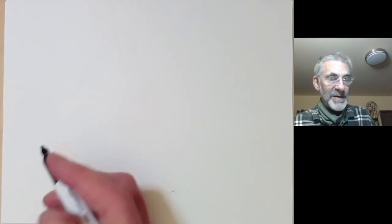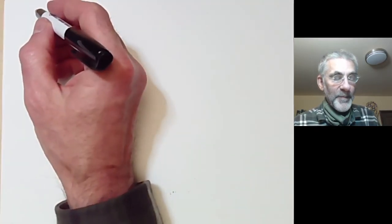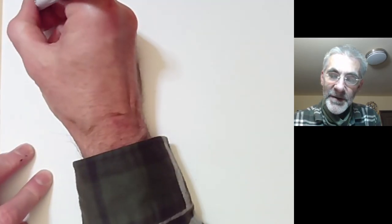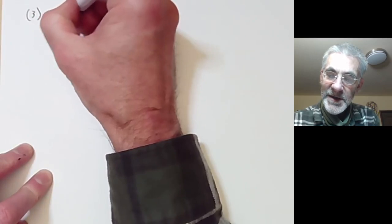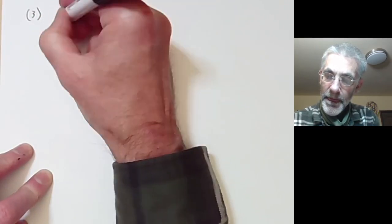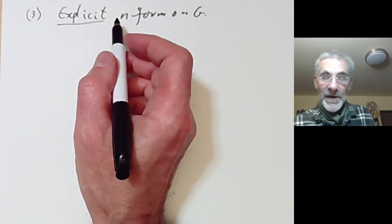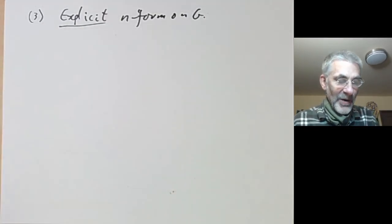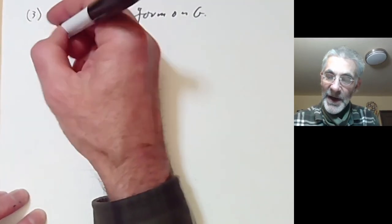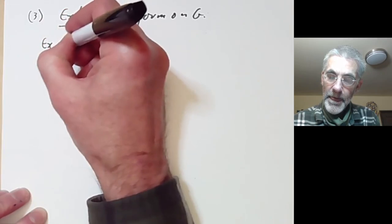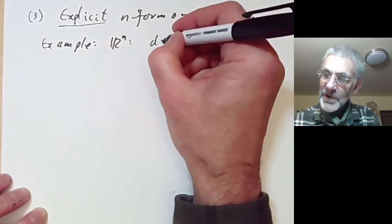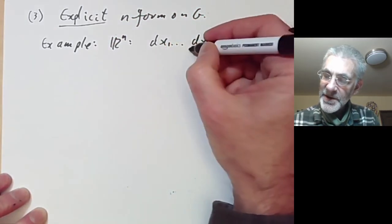That gives the second method of constructing a measure on a group: you choose a left invariant n-form by choosing the n-form at the identity and then translating it by left translation to everywhere on G. The third method is to write down an explicit n-form on G, which of course you have to do individually for each Lie group. Let me give some examples. For Rⁿ we just take the usual n-form dx₁ ∧ ... ∧ dxₙ and this just gives Lebesgue measure.